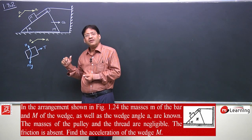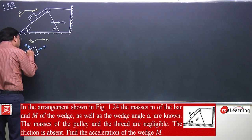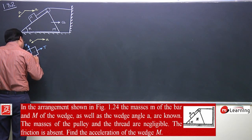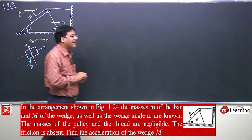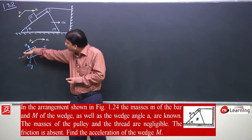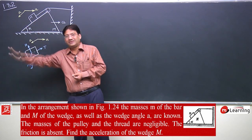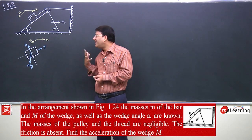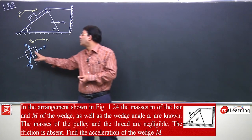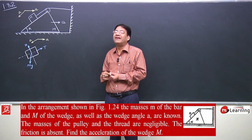For this free body diagram, the coordinate axis we choose will be along the normal and along the tension — that is, along the inclined plane and perpendicular to it. We choose this coordinate axis so that we do not need to resolve the normal reaction or tension. We avoid resolving reaction forces.